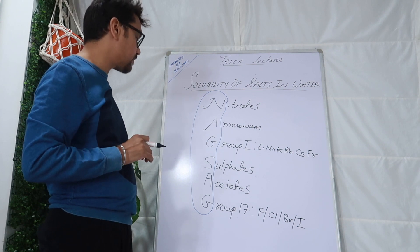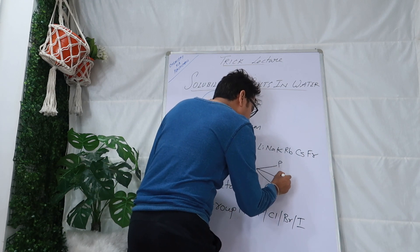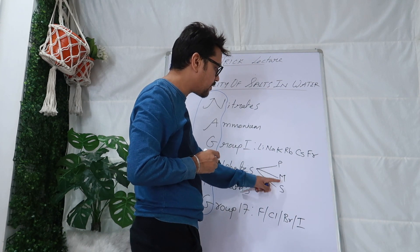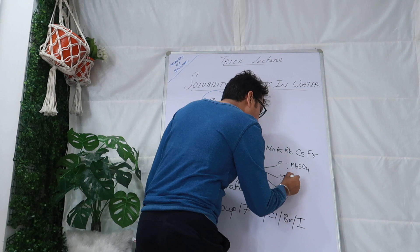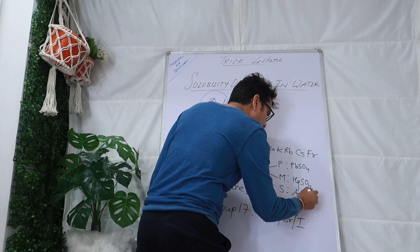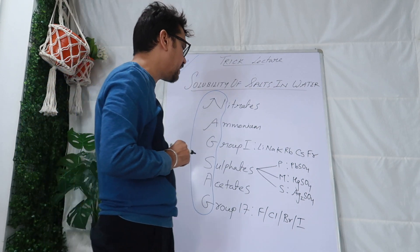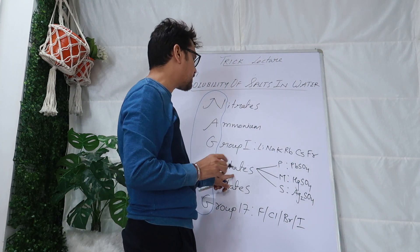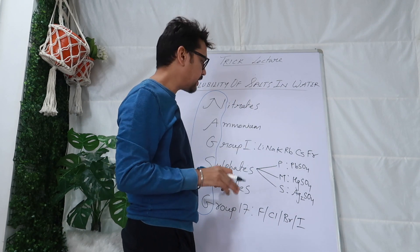Now there are some exceptions. You have to remember that only three sulfates are not soluble in water, based on my name Piyush Mavir Sharma: P for lead sulfate (PbSO4), M for mercury sulfate (HgSO4), and S for silver sulfate (Ag2SO4). They are all insoluble in water. Also, calcium sulfate, strontium sulfate, and barium sulfate are also insoluble in water. Otherwise, all other sulfates are soluble in water.